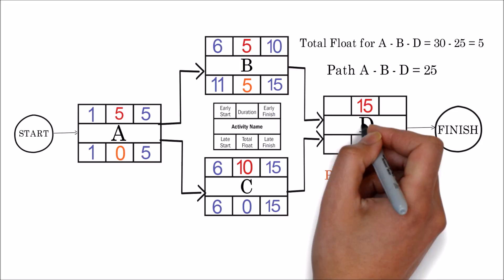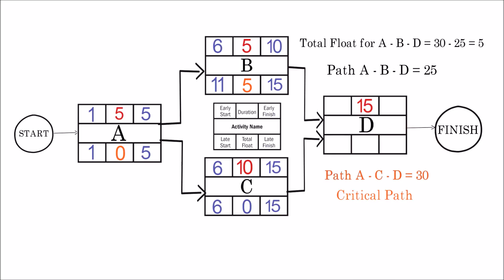Same as activity C, activity D also falls on the critical path and has 0 float. Early and late start days are 16, and early and late finish days are 30 days.